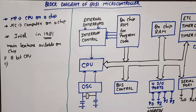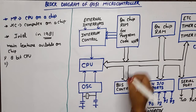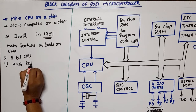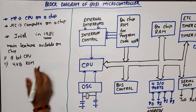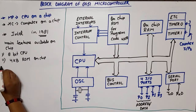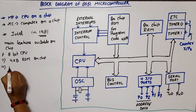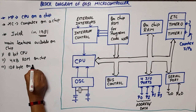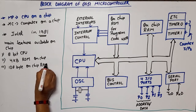The next feature is 4 KB on-chip ROM, which can be used for programming — this is called the 4 KB on-chip ROM. The third feature is 128 bytes of on-chip RAM for data storage.